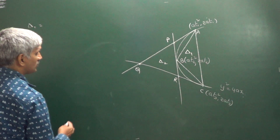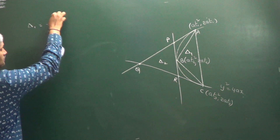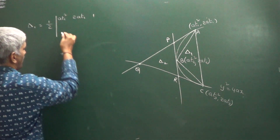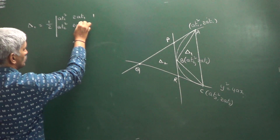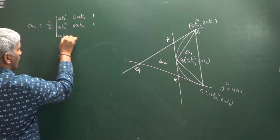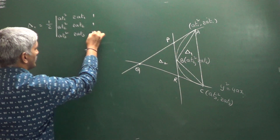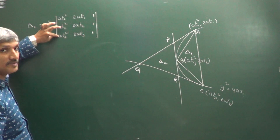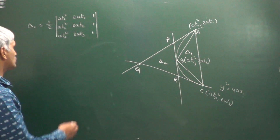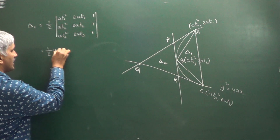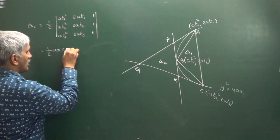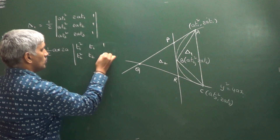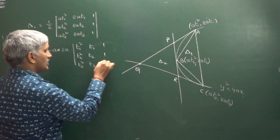Finding the area of triangle ABC = delta₁. That equals half times the determinant with rows (at₁², 2at₁, 1), (at₂², 2at₂, 1), (at₃², 2at₃, 1). According to properties of determinants, from the first column we take a common, and from the second column we take 2a common. So we get (1/2) · a · 2a times the determinant with rows (t₁², t₁, 1), (t₂², t₂, 1), (t₃², t₃, 1).